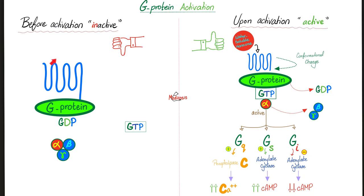The G-protein story: before the ligand binds the receptor, the G-protein is inactive — it's bound to GDP and the alpha, beta, and gamma subunits are together. Upon activation, when the ligand attaches to the receptor, the G-protein gets excited. It binds GTP instead of GDP — GDP is kicked out. Alpha alone binds GTP and kicks the beta and gamma subunits away. Now alpha is active, and GTP is active.